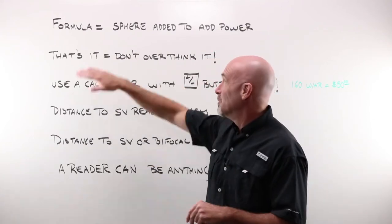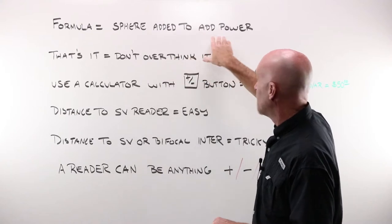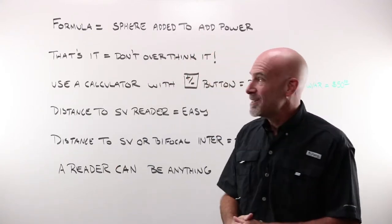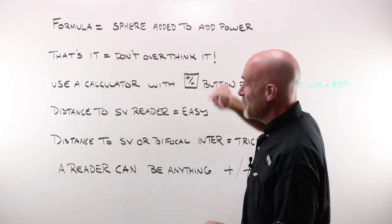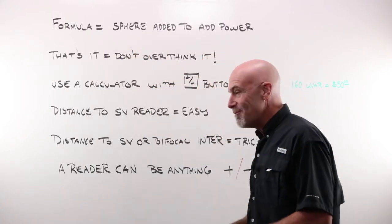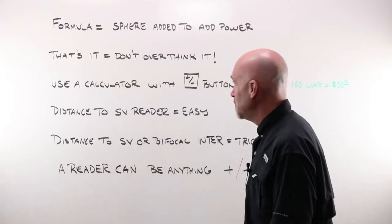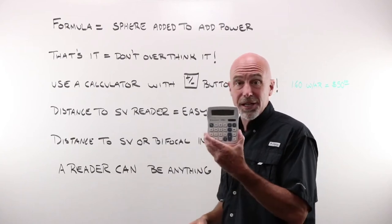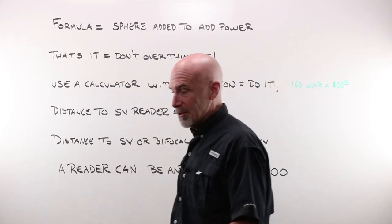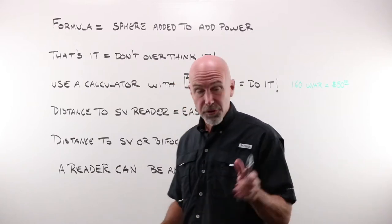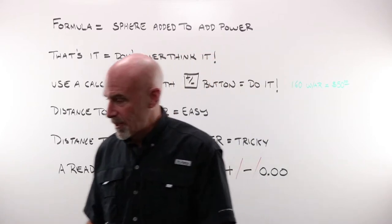A formula, if you will, for that is adding your sphere power to your add power. In the big world of optical formulas, adding your sphere power to your add power is really not all that hard to do. However, especially for you folks that are new, use a calculator, the one with little plus minus sign. You can pick these up for a dollar at the dollar store. You'll find them on your smartphone as well.